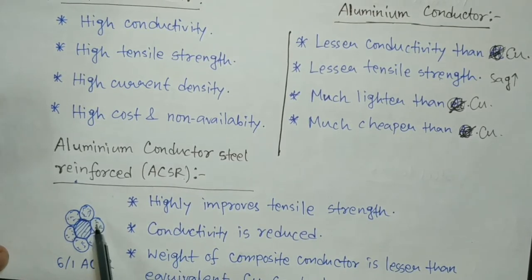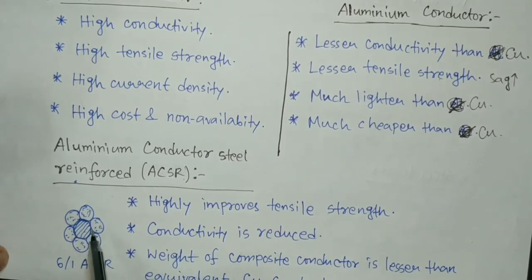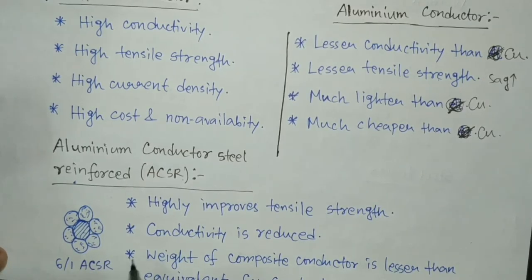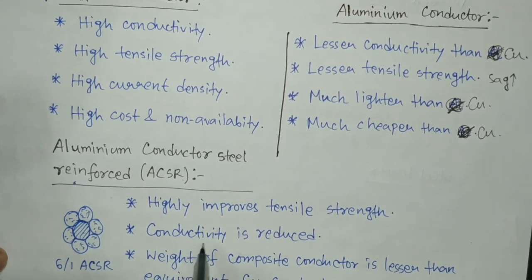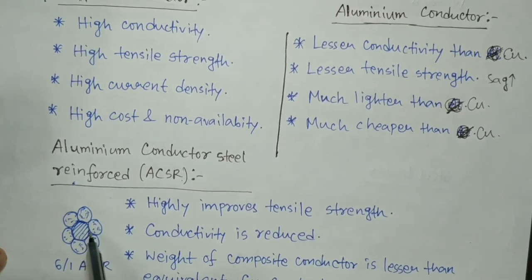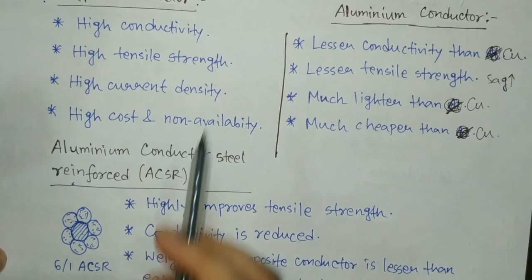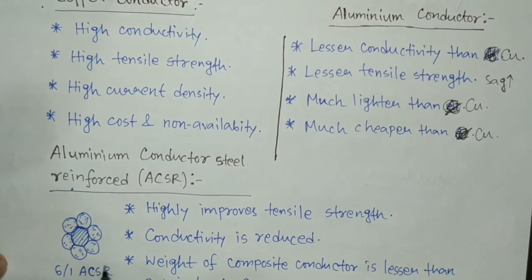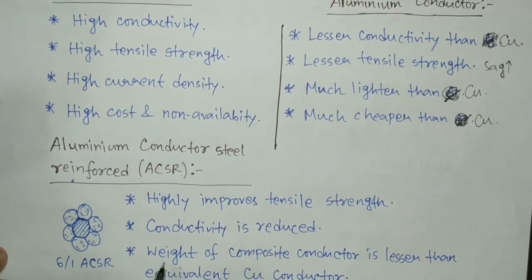This combination is always stranded, meaning the conductors are twisted among themselves, which also improves the mechanical strength of the conductor itself and highly improves the tensile strength. However, conductivity is not improved — it can actually be reduced, because here you are using two different metals, steel and aluminium, rather than pure aluminium.